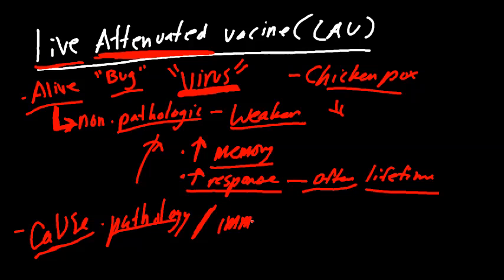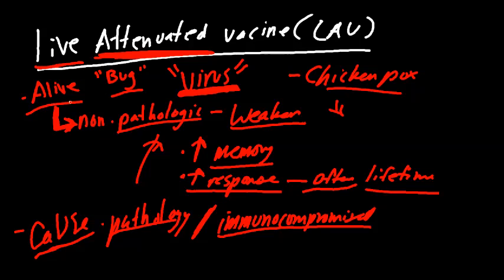Also, you don't want to give live attenuated vaccines to immunocompromised patients. In immunocompromised patients — such as someone on lifetime steroids or an organ transplant patient on immune suppressive agents — we're not going to be able to mount that full response against this live bug. Even though it's not very pathologic, why would we want to introduce bugs into someone whose immune system doesn't work? The live attenuated vaccine is really meant for someone with a strong, healthy, robust immune system.